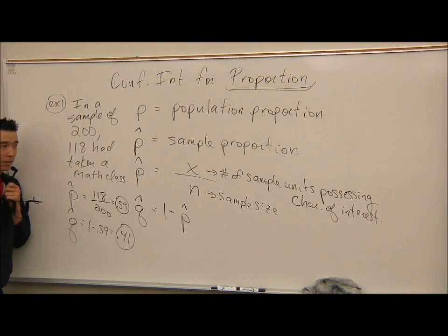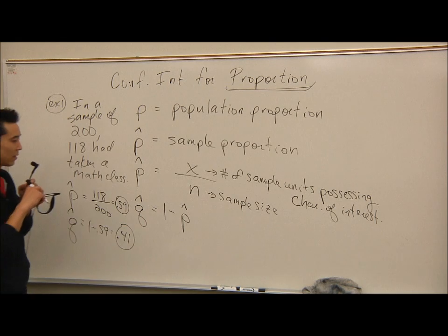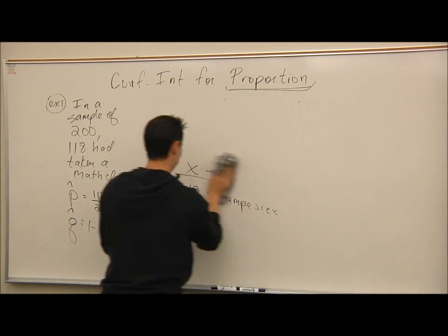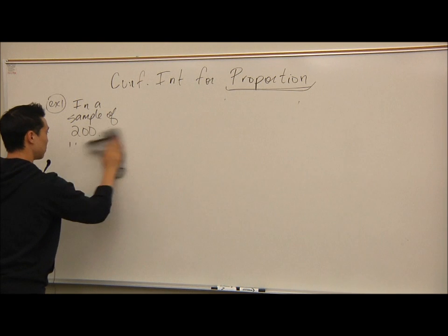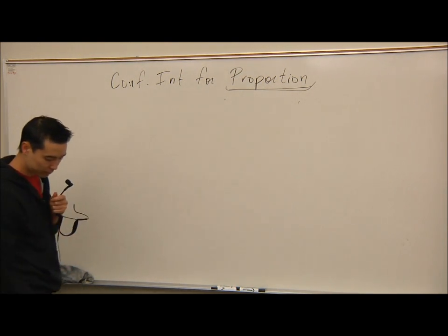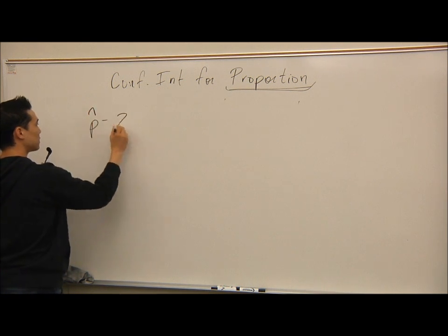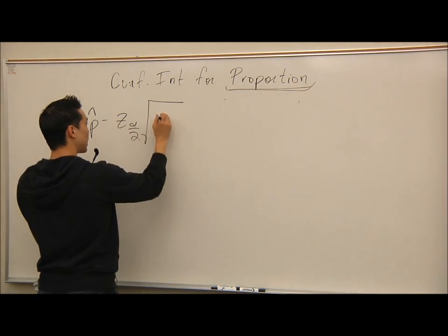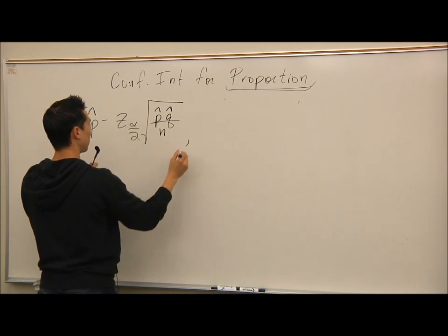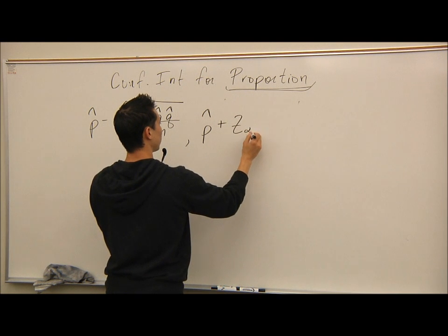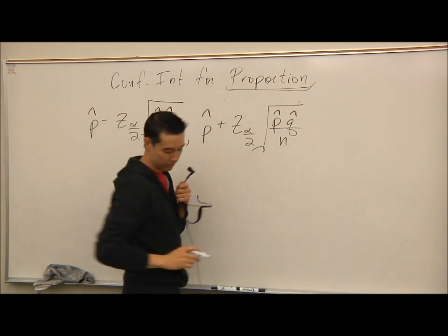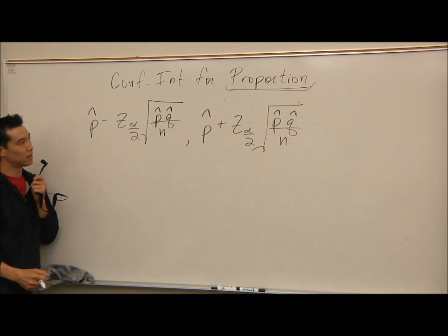In our formula, which I'll put on the board next, you have to be able to solve for those. Let's look at what our confidence interval formula looks like now. We have P hat minus Z sub alpha over 2 times the big square root of P hat times Q hat divided by N, comma, P hat plus Z sub alpha over 2 times the big square root of P hat times Q hat all divided by N.